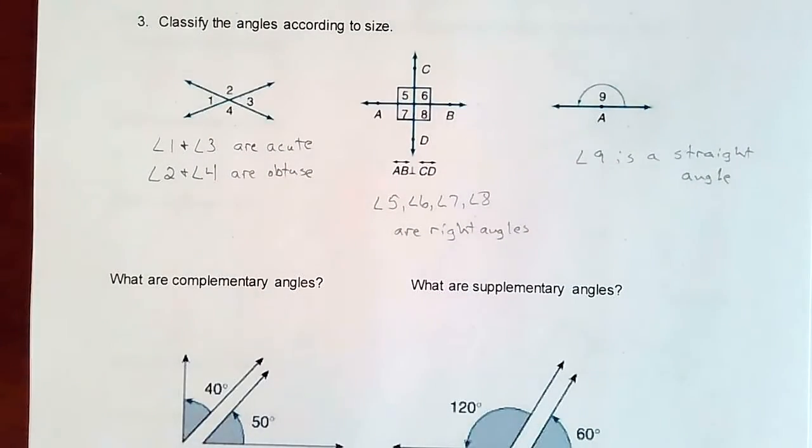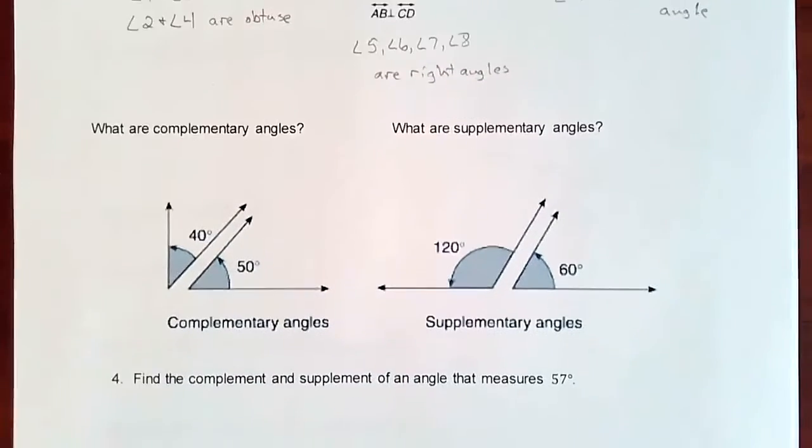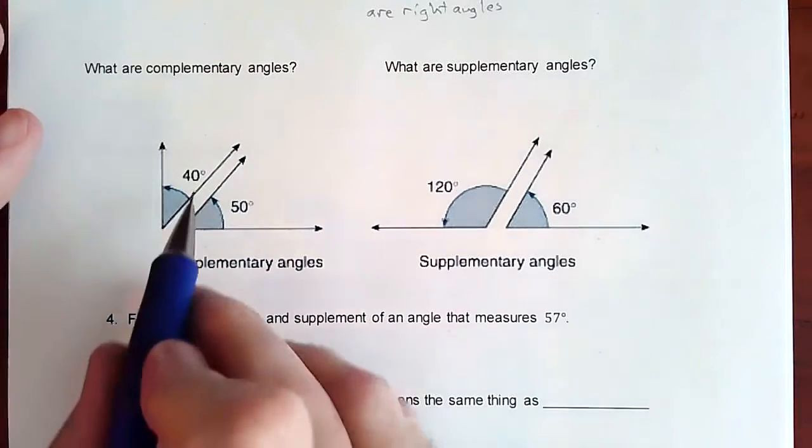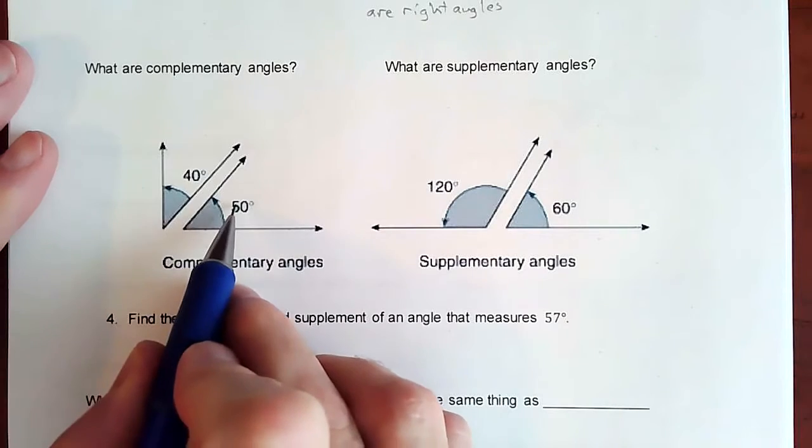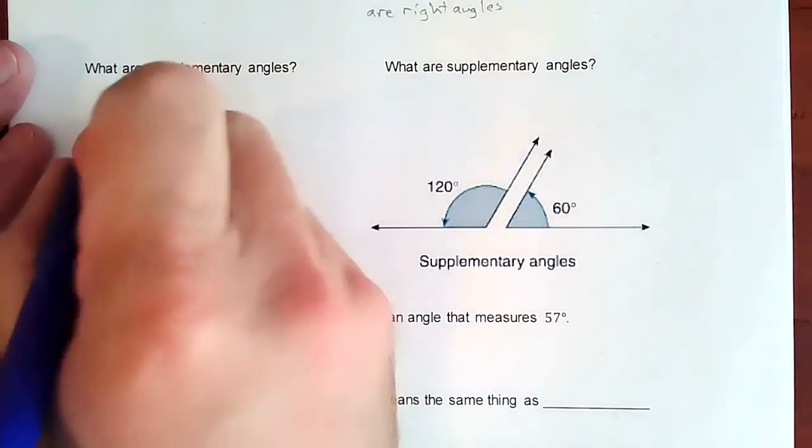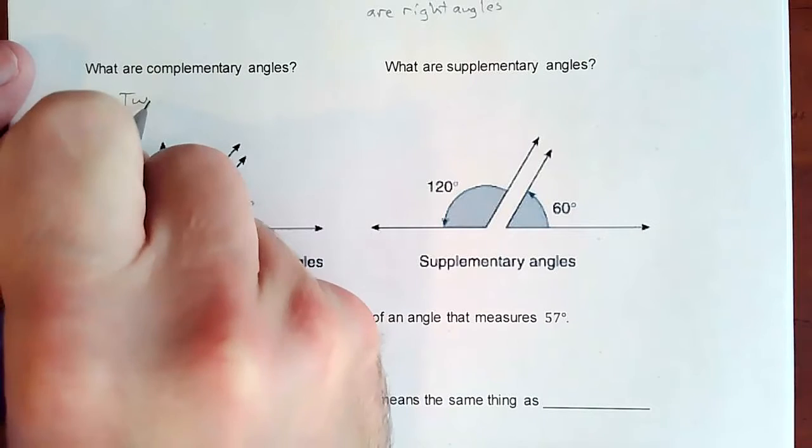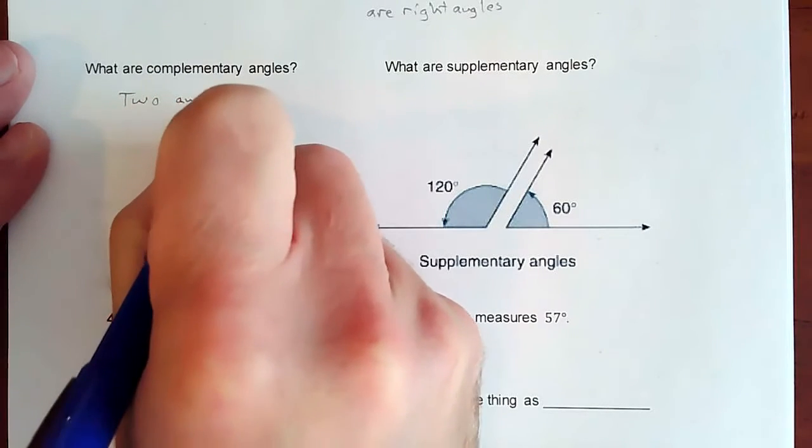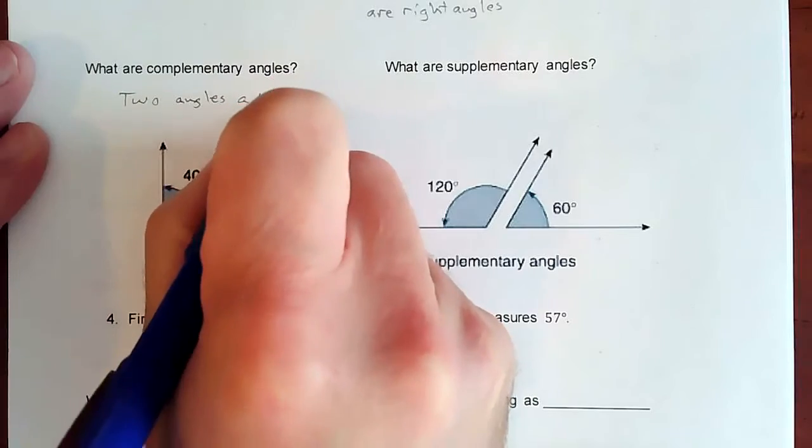Okay, so two other little pieces of information, two other things that we categorize angles with are when you put angles together, they are known as complementary if these two angles add up to 90 degrees. So two angles add to 90.